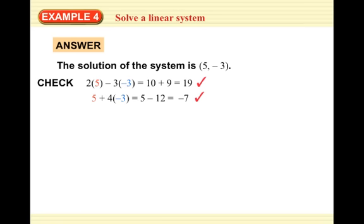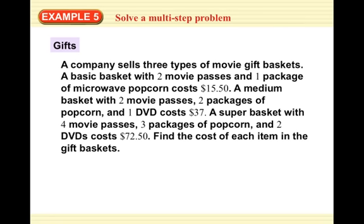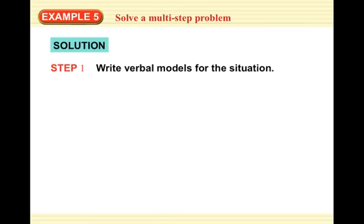Now we're ready for example 5. A company sells 3 types of movie gift baskets. A basic basket with 2 movie passes and 1 package of microwave popcorn costs $15.50. A medium basket with 2 movie passes, 2 packages of popcorn, and 1 DVD costs $37. A super basket with 4 movie passes, 3 packages of popcorn, and 2 DVDs costs $72.50. Find the cost of each item in the gift baskets. So we want to find the cost of a movie pass, the cost of microwave popcorn, and the cost of a DVD.